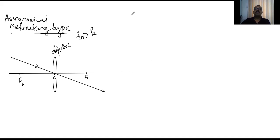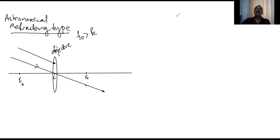When light rays come parallel to the principal axis, they meet at the focus. Here, the light rays are coming parallel to each other but not parallel to the principal axis. Those parallel rays that are not parallel to the principal axis will meet at a point on the focal plane. So the image is formed at the focal plane of the objective, and it is an inverted image.